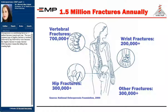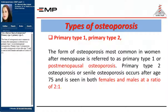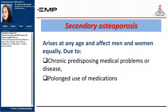By fragility fracture, we mean a fracture following minor trauma like falling from standing height. Osteoporosis is either primary type 1 or type 2. The form most common in women after menopause is referred to as primary type 1 or postmenopausal osteoporosis. Primary type 2 or senile osteoporosis occurs after the age of 75 years and is seen in both females and males at a ratio of 2 to 1. Secondary osteoporosis arises at any age and affects men and women equally. It occurs due to chronic predisposing medical diseases like Cushing's disease or thyrotoxicosis, or prolonged use of medications like steroids or anticonvulsants.